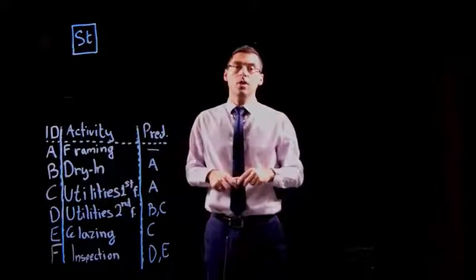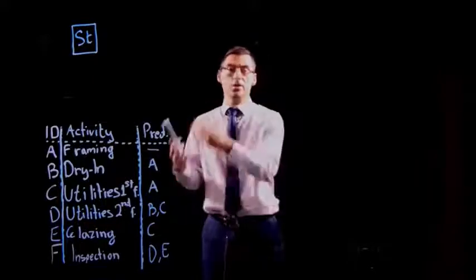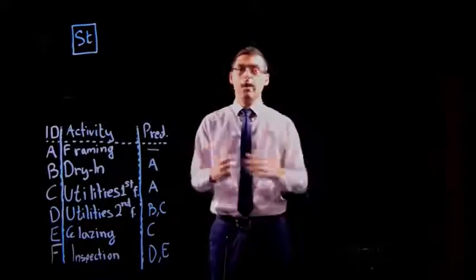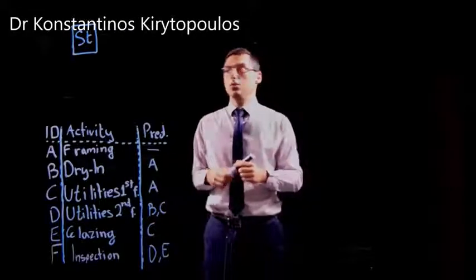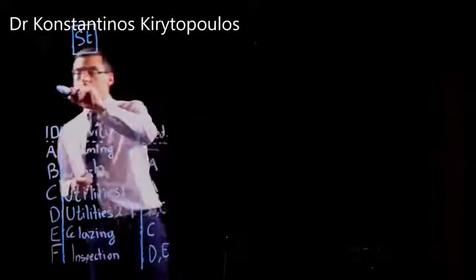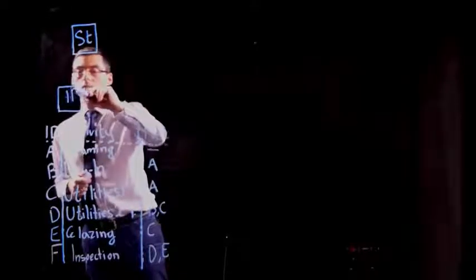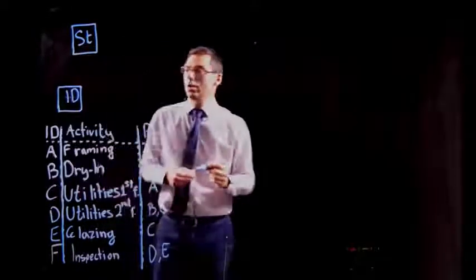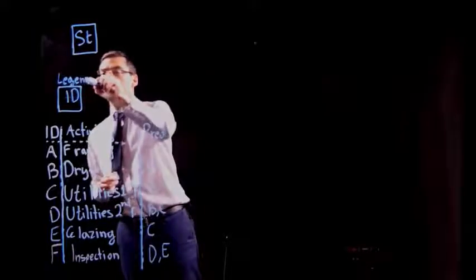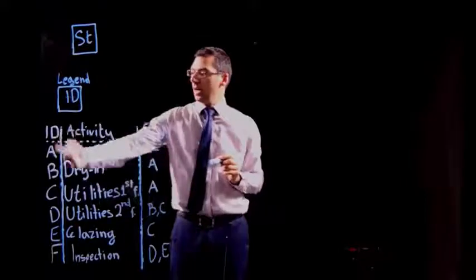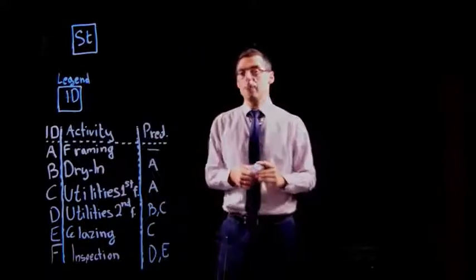I have to remind you that there are different representations of nodes. You might see squares, rectangles, circles, triangles, whatever you can imagine. But that's not a problem. The only thing that you need to do is to have a legend denoting what you have in the node. So this is our legend and it tells us that the ID of the activities is going to be used as the basic information in the node.